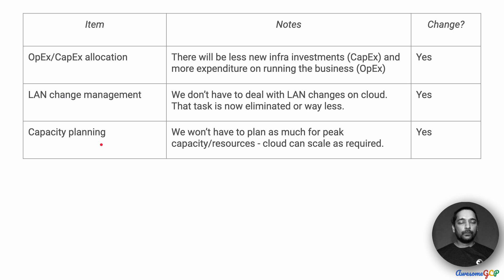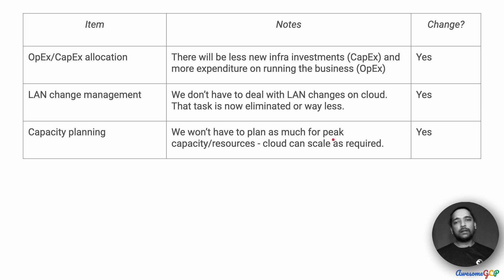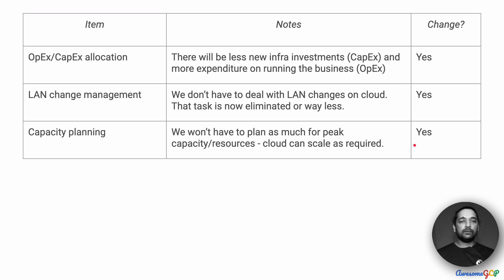How about capacity planning? Capacity planning is required so that we can acquire the resources that will meet peak demand. On the cloud, we don't have to necessarily plan for peak capacity because it can scale as required. Our capacity planning requirements are going to drop significantly because provisioning can happen automatically based on increases in requests and load. Capacity planning is not completely eliminated — we still need to budget using tools like the Google Cloud pricing calculator. Overall, is there a change? My answer is yes.